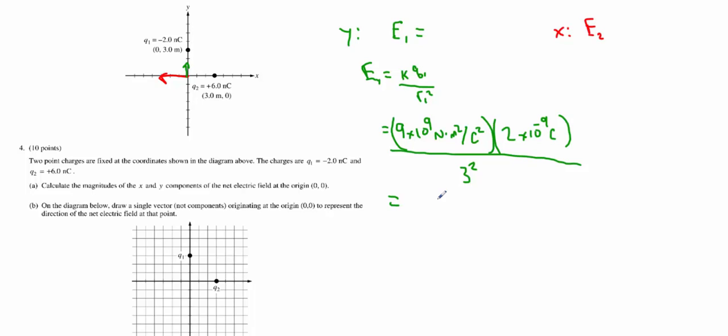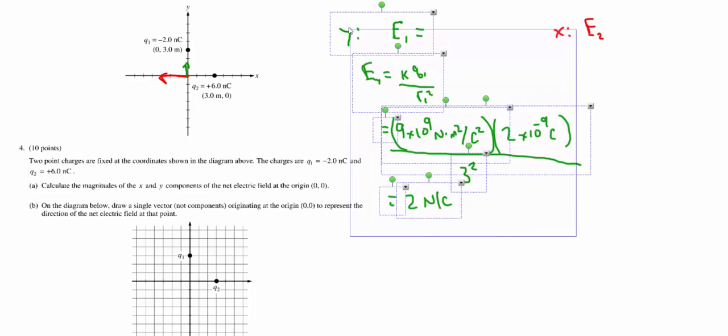This comes out to 6 Newtons per Coulomb. Make sure you practice this calculator work. Make sure you are indeed getting these numbers. I would use parentheses if you do not get that. Oh, I just lied. That is the wrong one. That was for x. It's actually 2 Newtons per Coulomb. That is the electric field due to the negative 2 nanocoulomb charge.